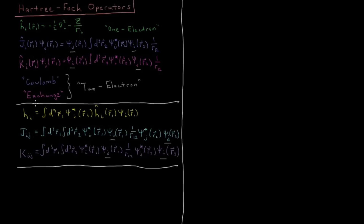Additionally we have the exchange operator, which is like a Coulomb operator, but instead of acting on psi_j and returning just a function of position, it actually switches orbital j to orbital i, and inside the integral we switch psi_i to psi_j. The exchange operator doesn't make sense by itself because it exchanges indices inside the orbital. The one-electron operator depends only on r_1, whereas the Coulomb and exchange operators involve interaction of two electrons with coordinates r_1 and r_2 — thus called two-electron operators.